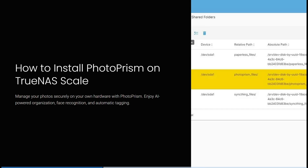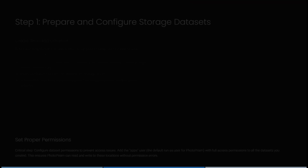The first thing we need to do is jump into PhotoPRISM and make sure that you have an account. Also make sure that you have TrueNAS Scale. Make sure that these are downloaded. You can now manage your photos on your own hardware with PhotoPRISM, and you can also enjoy the AI-powered organization, face recognition, as well as automatic tagging.